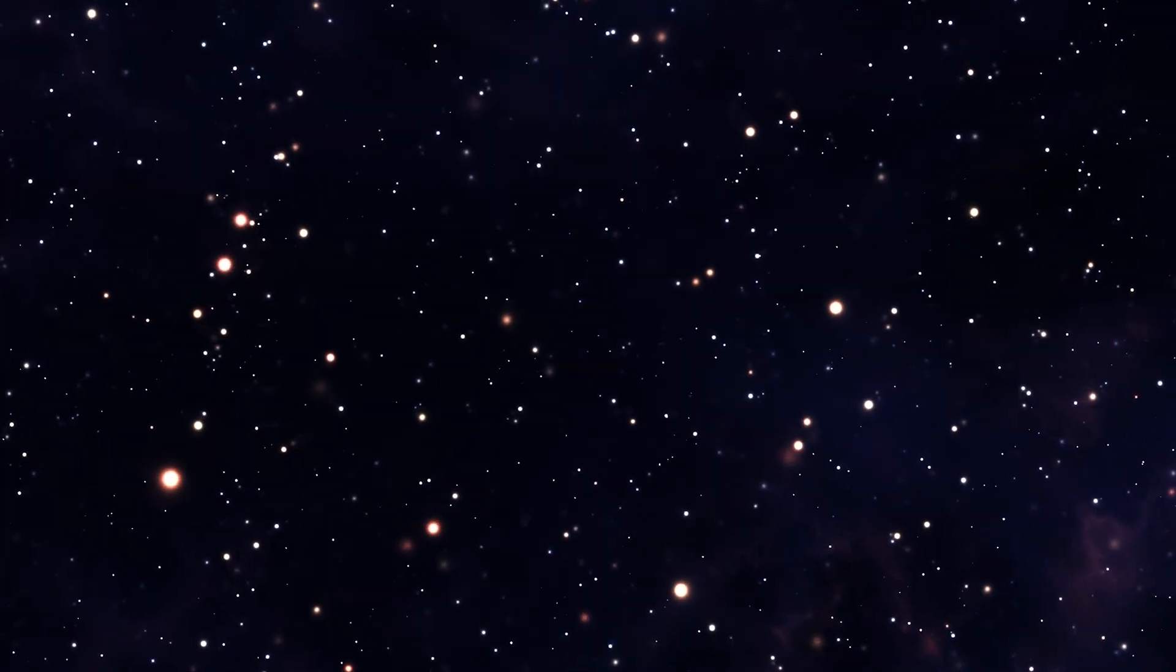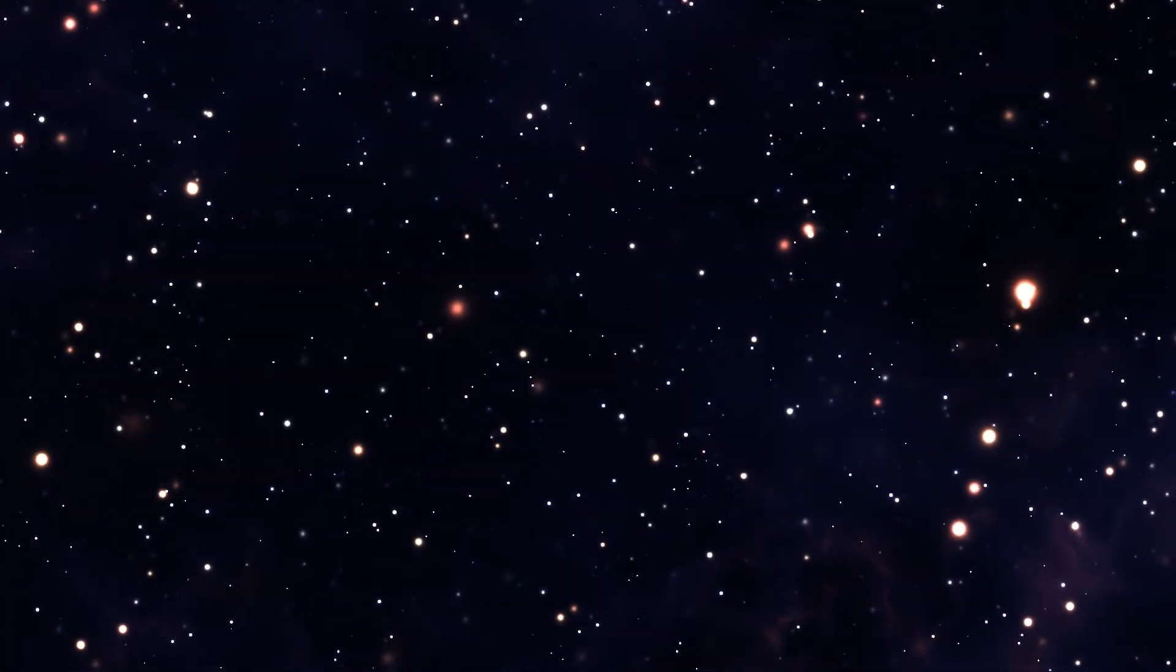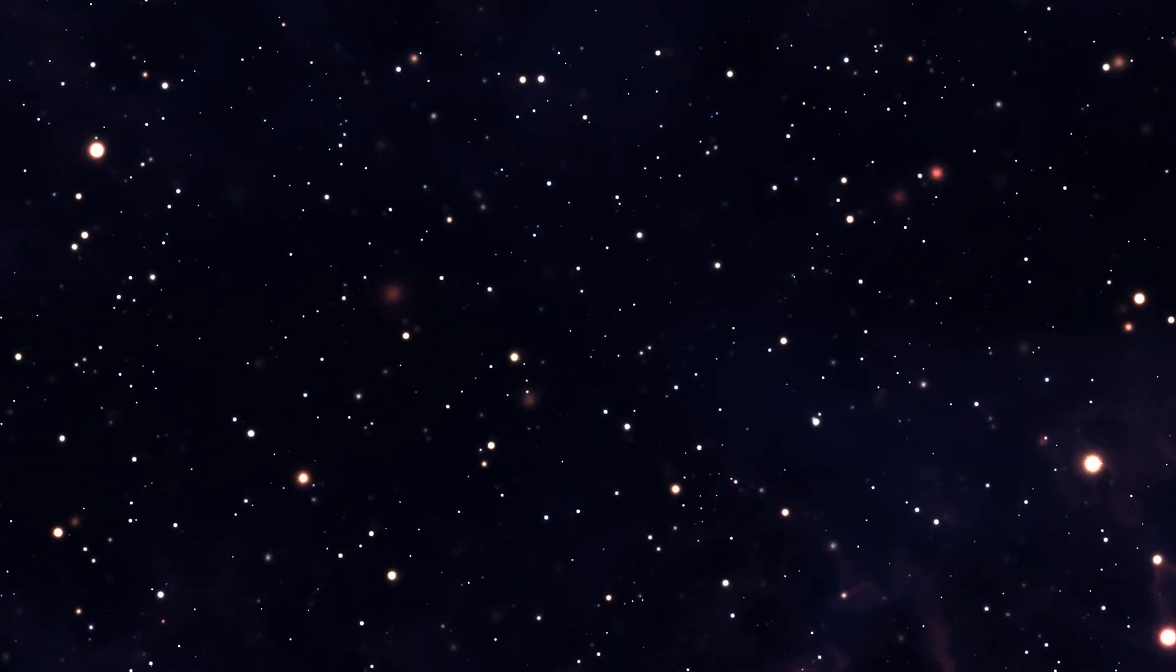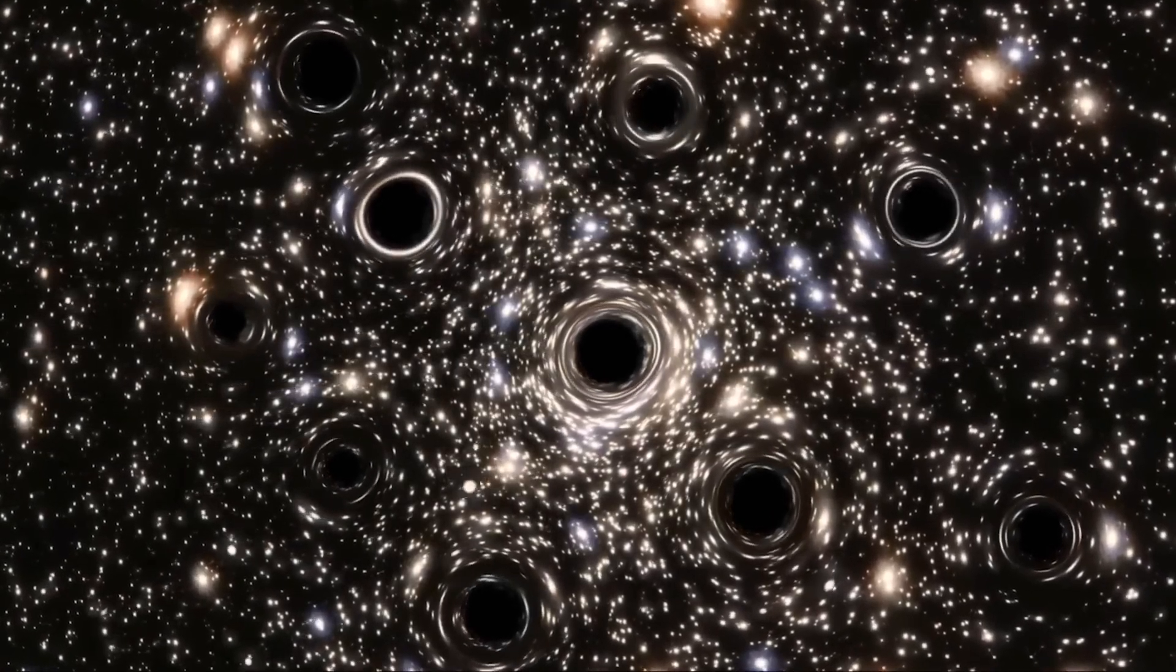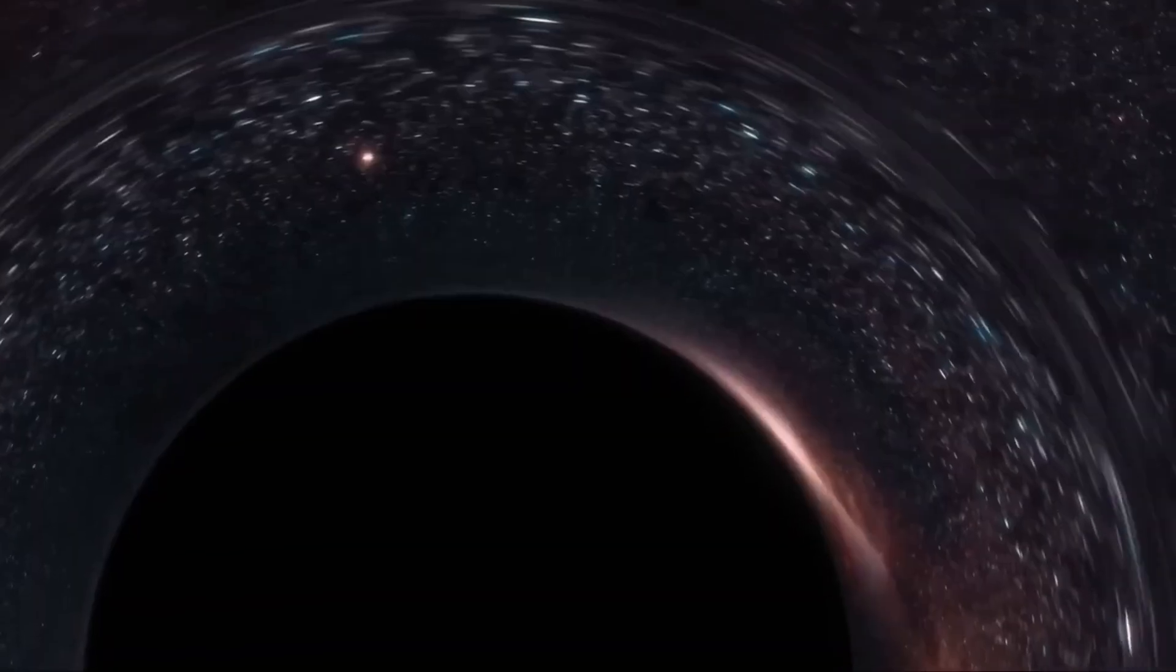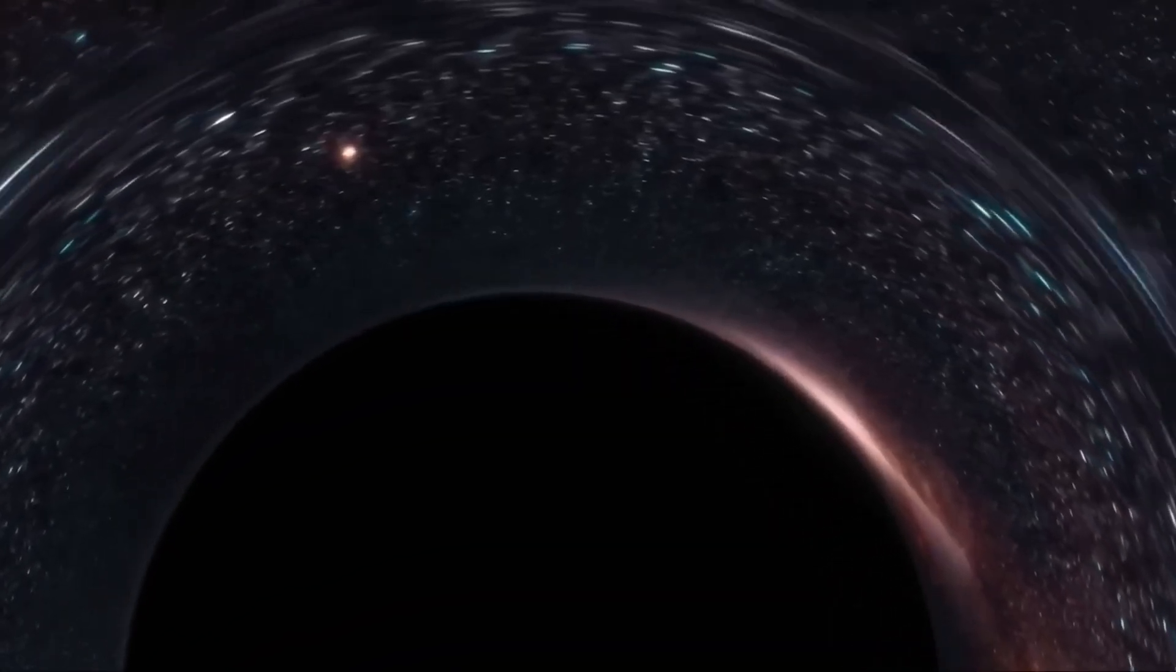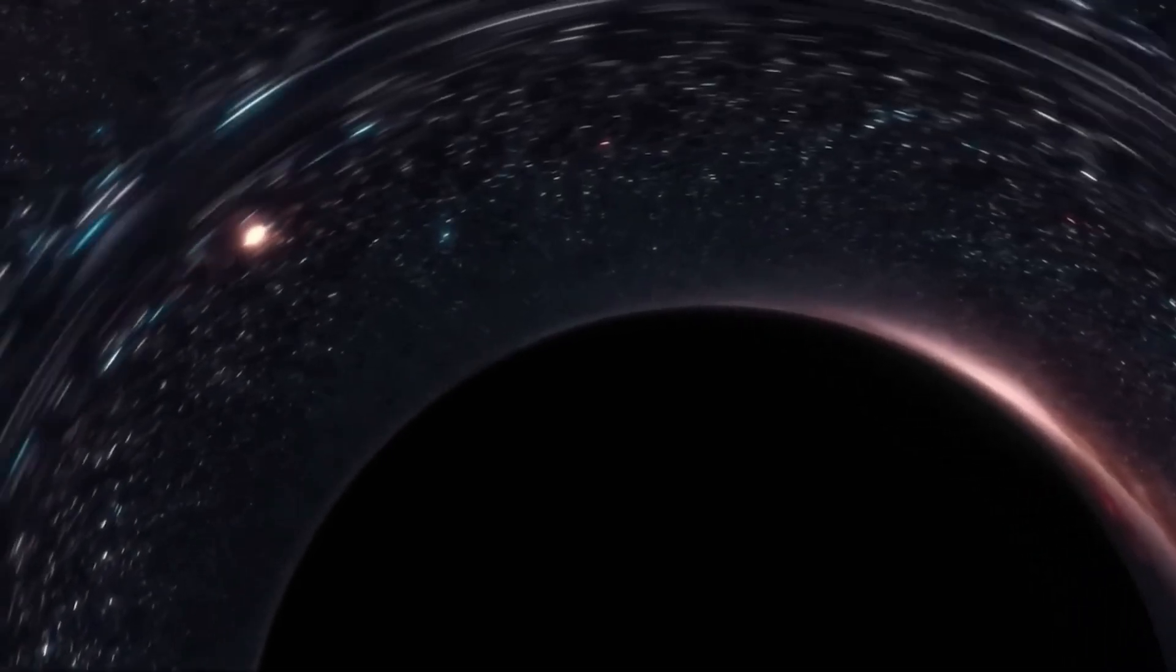Still, there's a practical side to all of this. Scientists are now re-examining the physics of the early universe to see if there's another way these galaxies could exist naturally. One possibility involves primordial black holes, dense objects that may have formed right after the Big Bang. If enough of them clustered together, they could seed galaxies far earlier than expected.